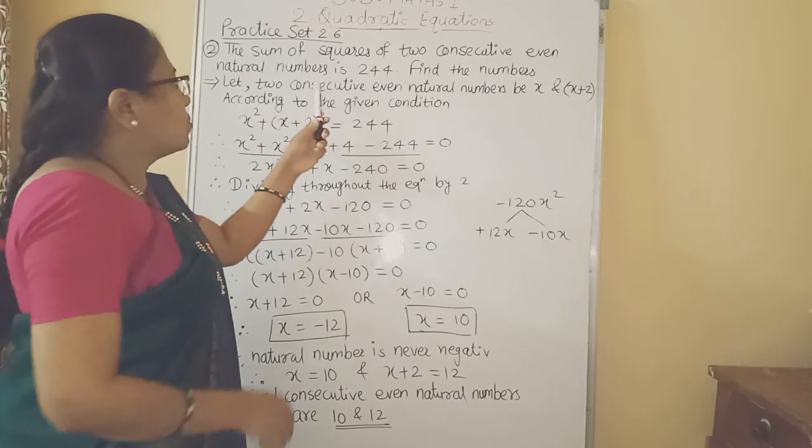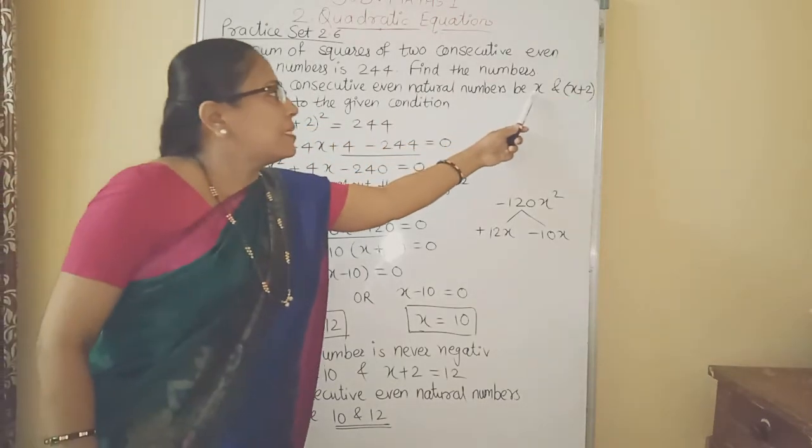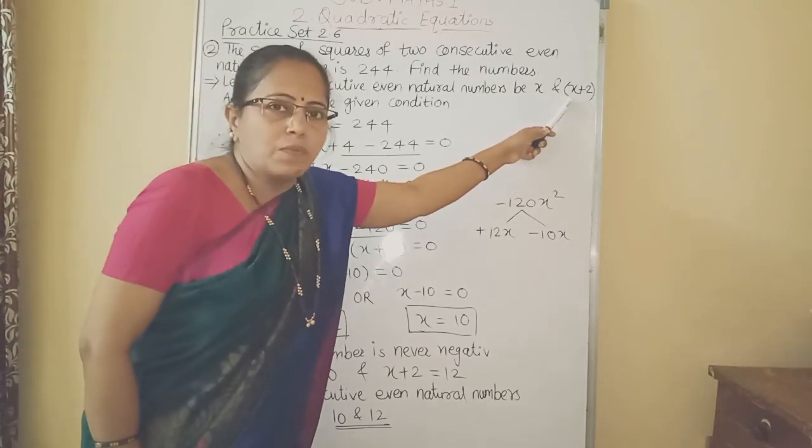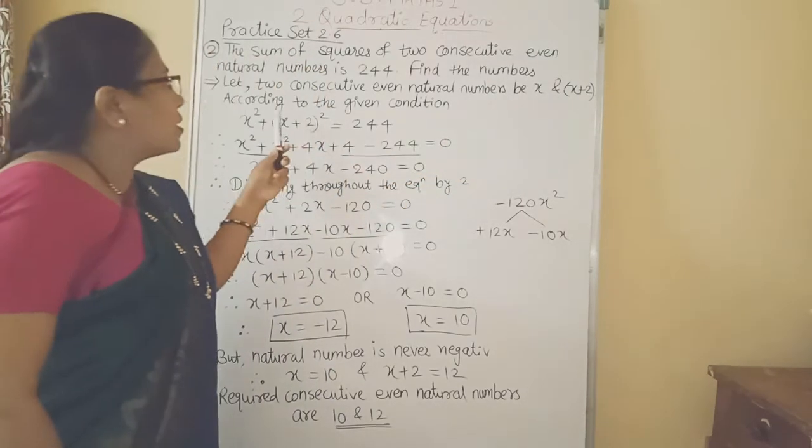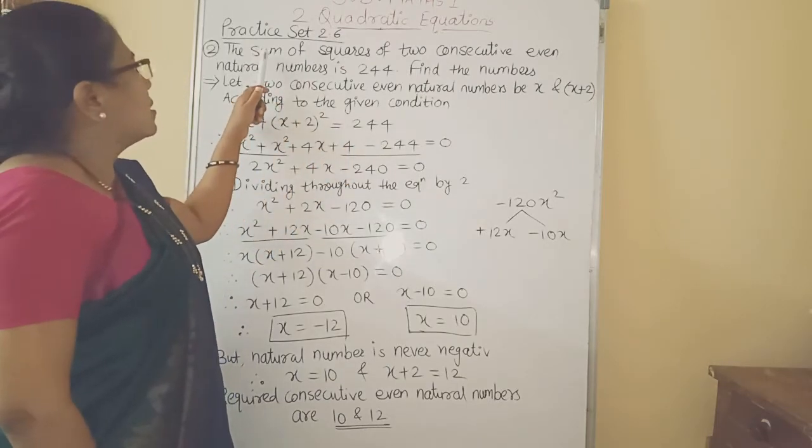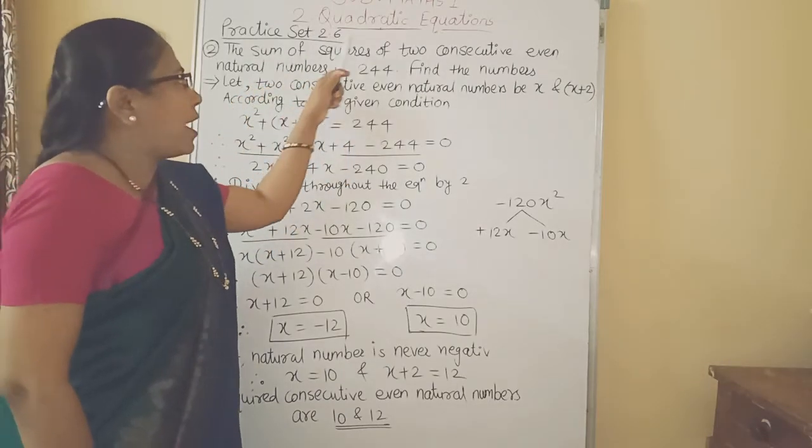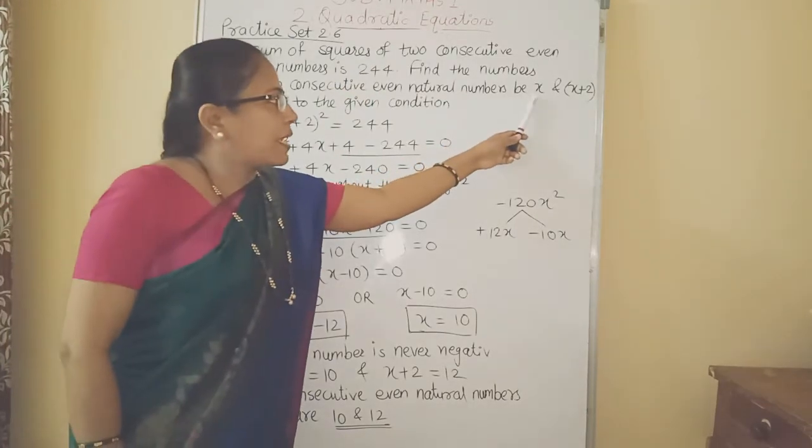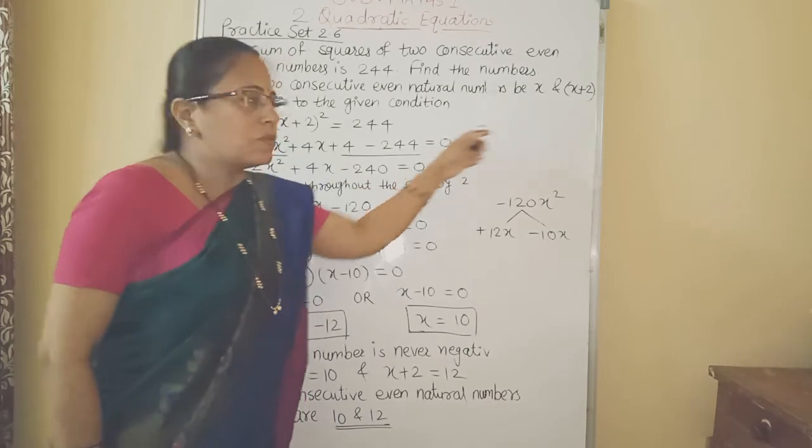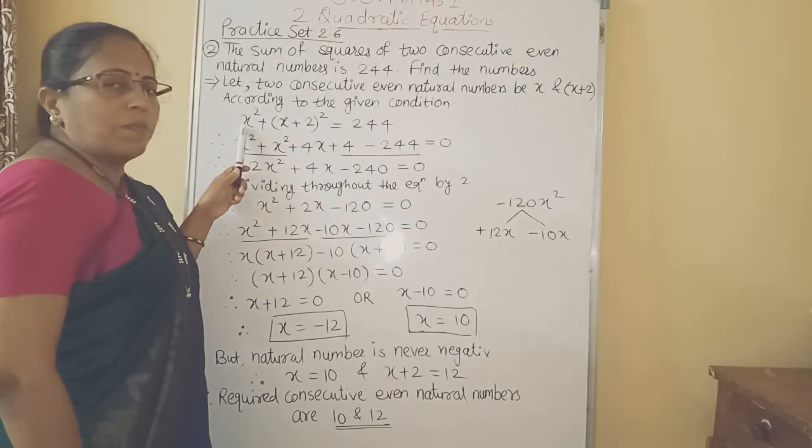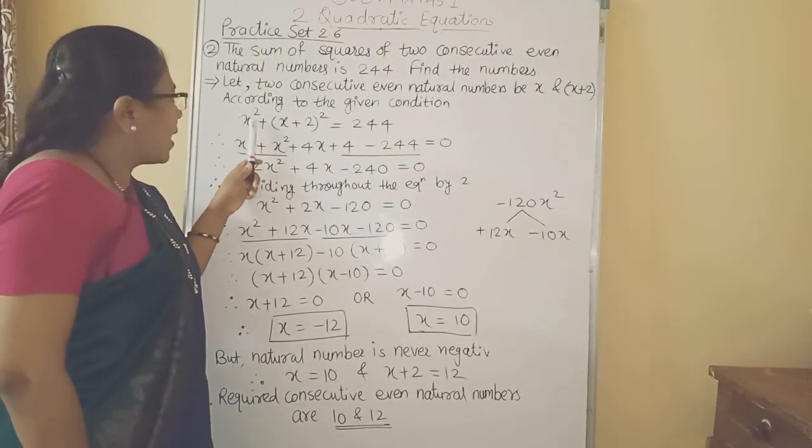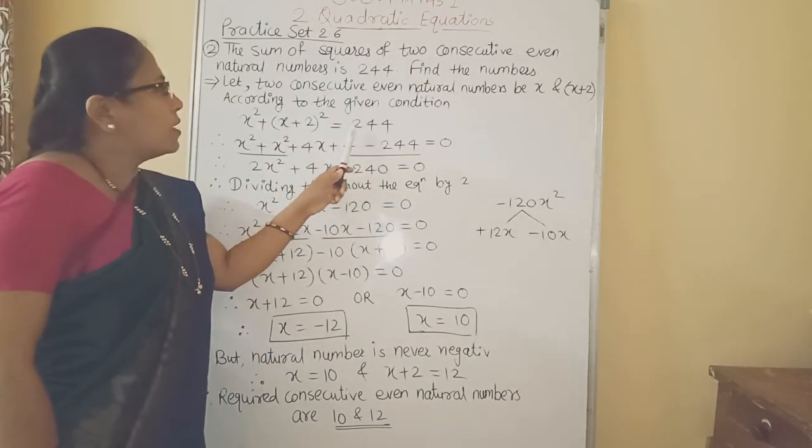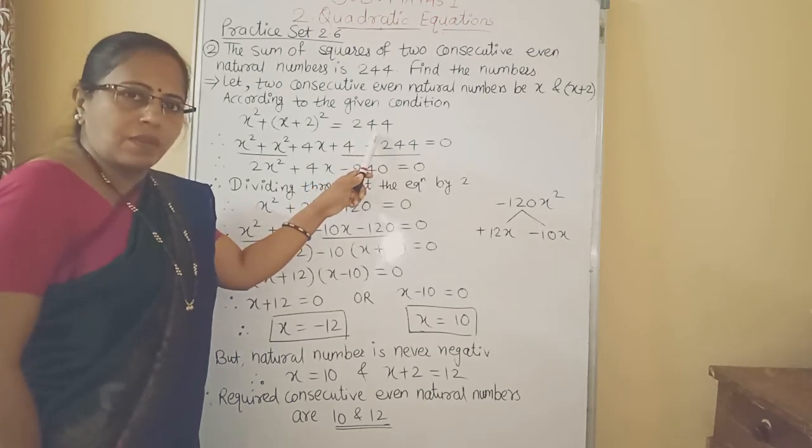So let me assume the consecutive even natural numbers is x and the second one is x plus 2. Now according to the given condition, the condition is given sum of squares of two consecutive even numbers. And our consecutive even numbers are x and x plus 2. So according to the condition, sum of their square means x square plus x plus 2 the whole square is equal to 244.